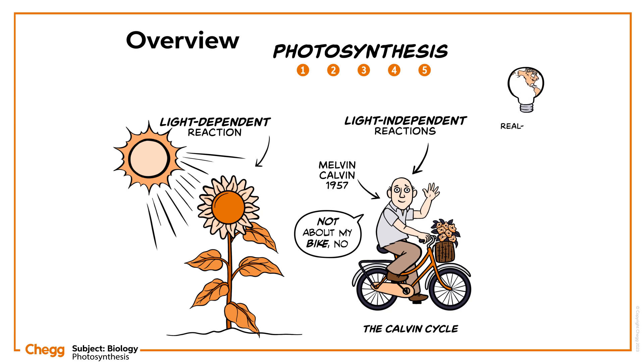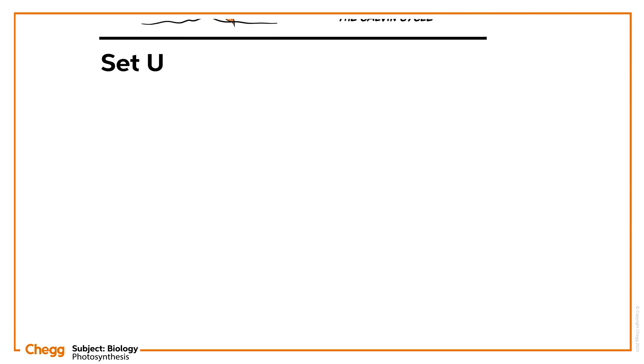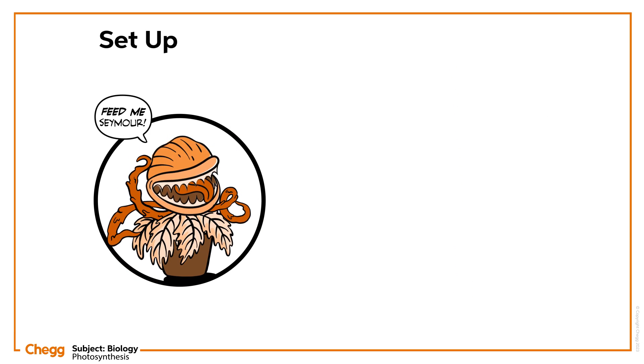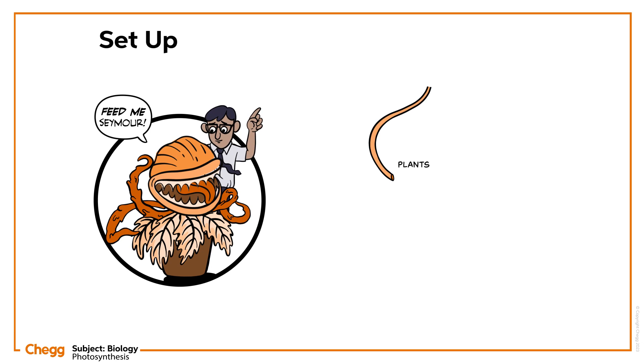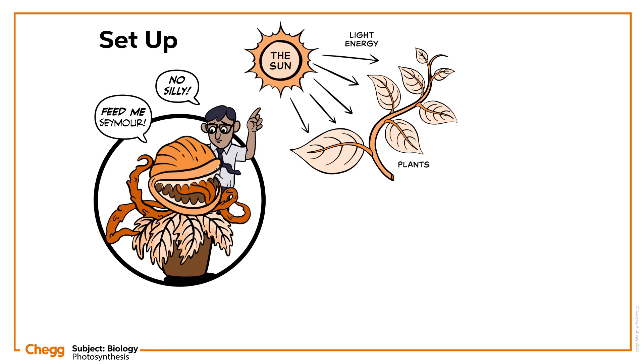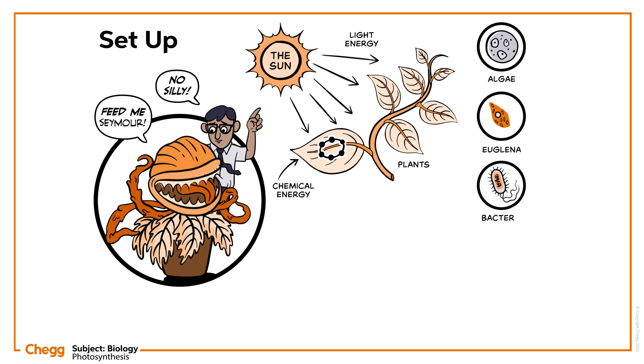We will also discuss a few examples, along with some common mistakes to get a clear understanding of the concept. Do you know how plants make their food? It's through the process of photosynthesis. In this process, the light energy is transformed into chemical energy in plants.